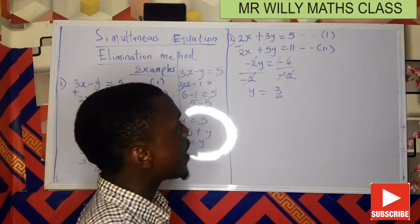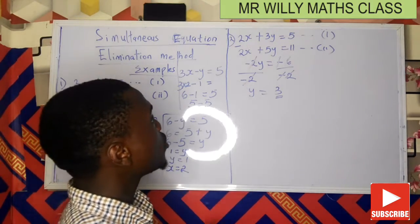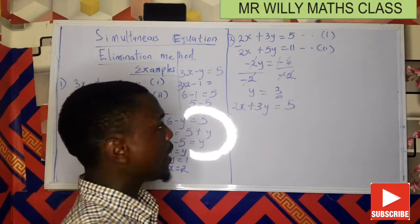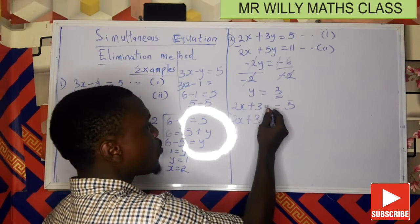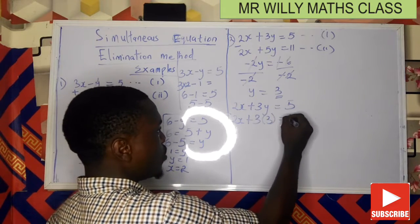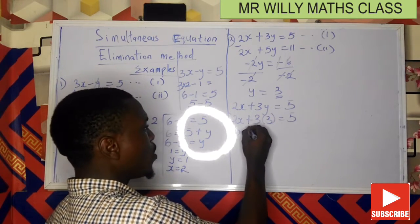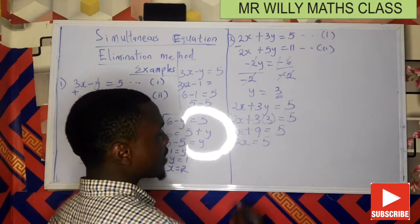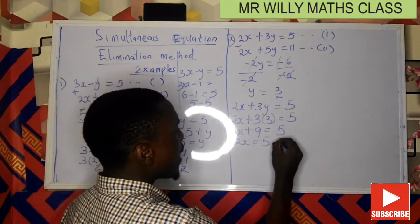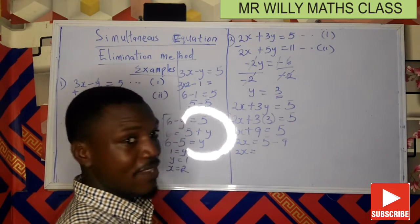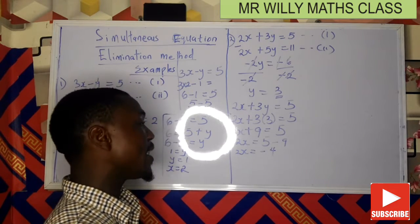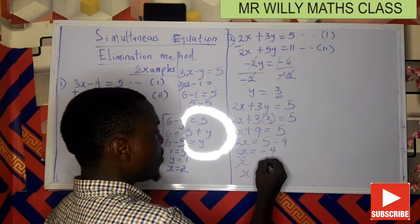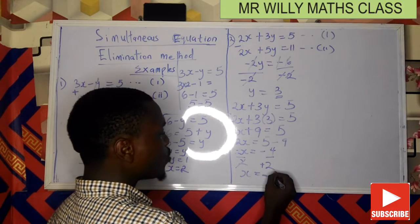Now we substitute y equals 3 into equation one to solve for x. Equation one is 2x plus 3y equals 5, so 2x plus 3 times 3 equals 5, which gives 2x plus 9 equals 5. Moving 9 to the other side: 2x equals 5 minus 9, so 2x equals minus 4. Dividing both sides by 2 gives x equals minus 2.